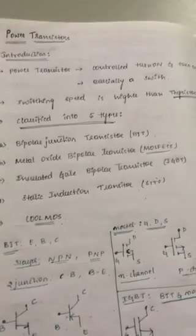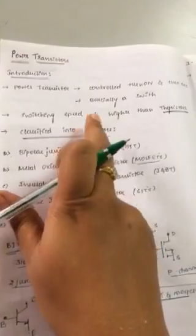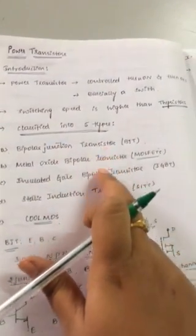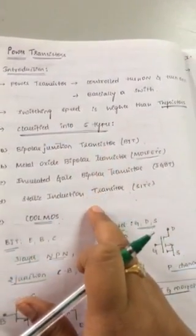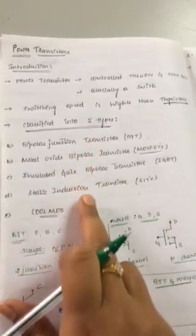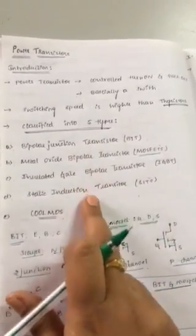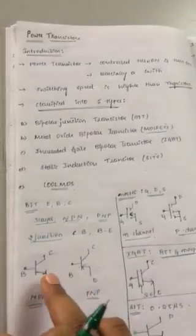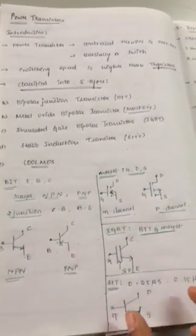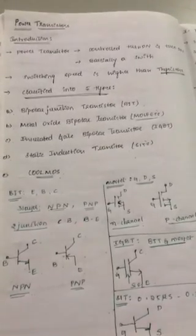In the introduction part, we studied the definition of a power transistor and its classification into five types. For each of the five types — BJT, MOSFET, IGBT, SIT, and CoolMOS — we have seen the terminals and the symbols. Thank you.